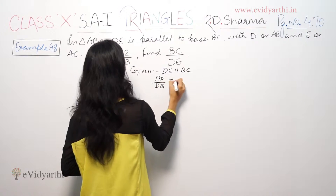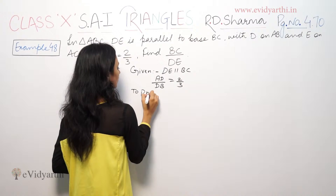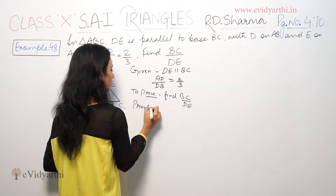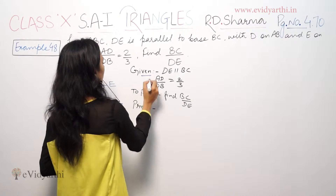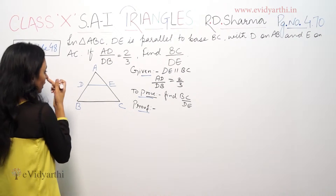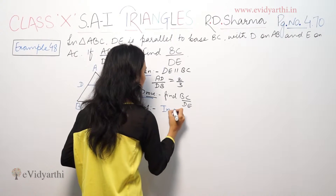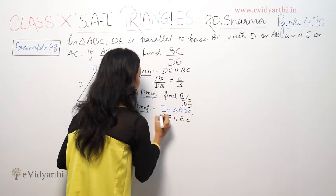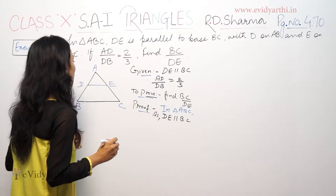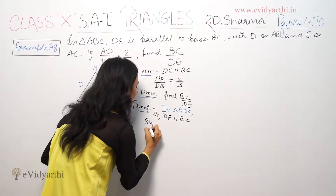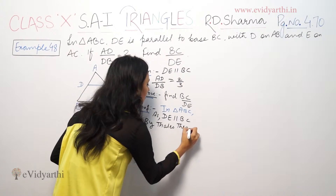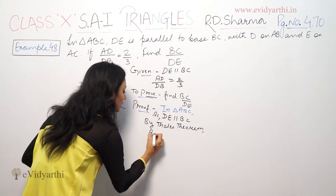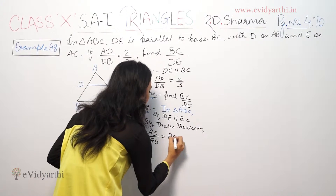AD by DB is equal to 2 by 3. Since DE is parallel to BC, by the basic proportionality theorem, this ratio is equal. So the ratio is equal to AE upon AC, meaning AB by AD is equal to AC by AE.